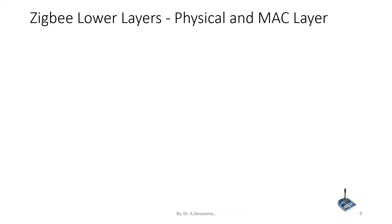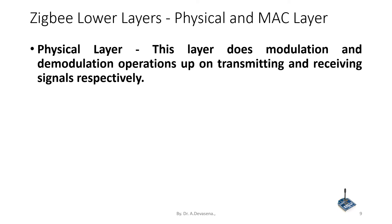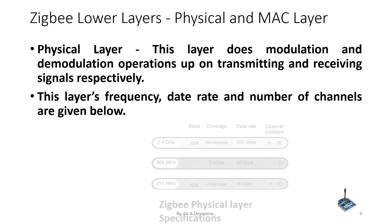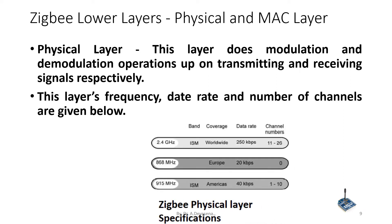ZigBee lower layers — physical and MAC layer description. Physical layer: this layer performs modulation and demodulation operations on the transmitting and receiving signals. The frequency, data rate, and number of channels are given in this representation of the ZigBee physical layer specifications.